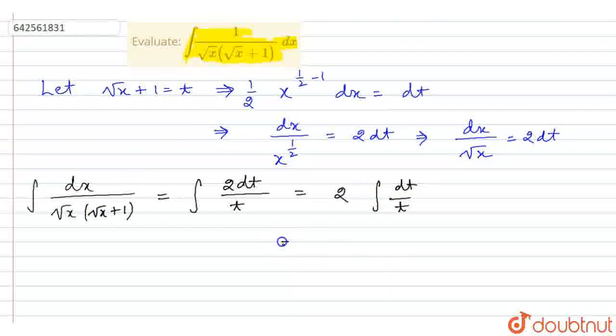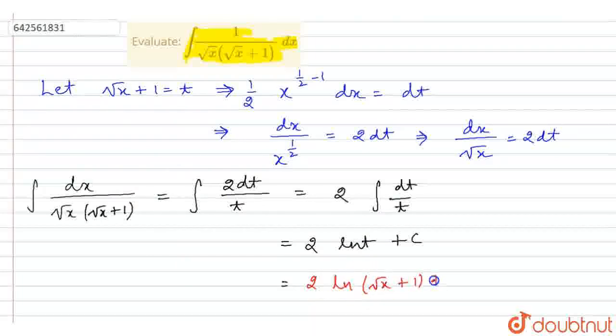Now, the integration of this is ln t plus we have constant of integration. Now, we can replace this t again by root x plus 1. So, the final answer looks like twice of ln root x plus 1 plus constant of integration. Right. Thank you.